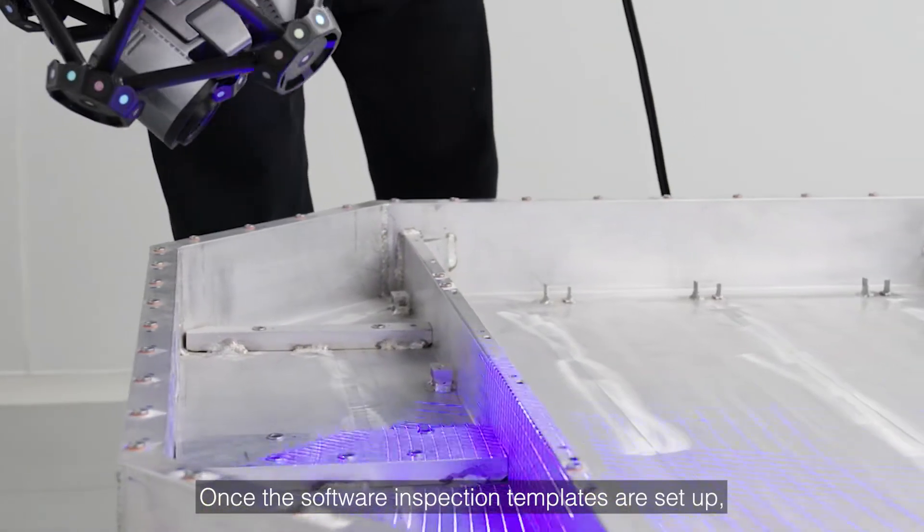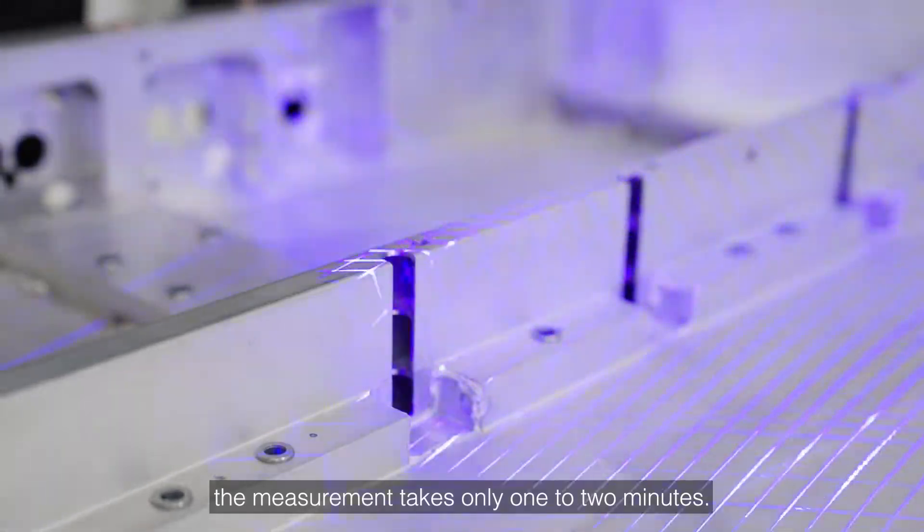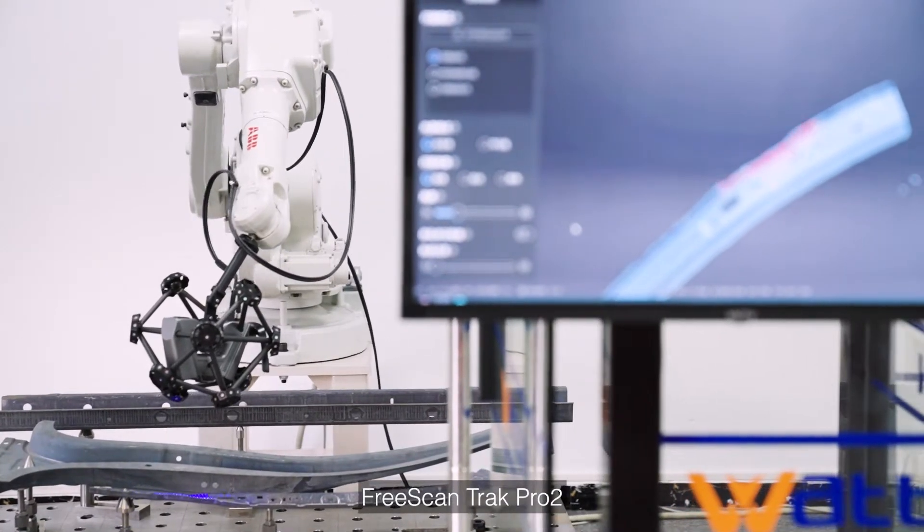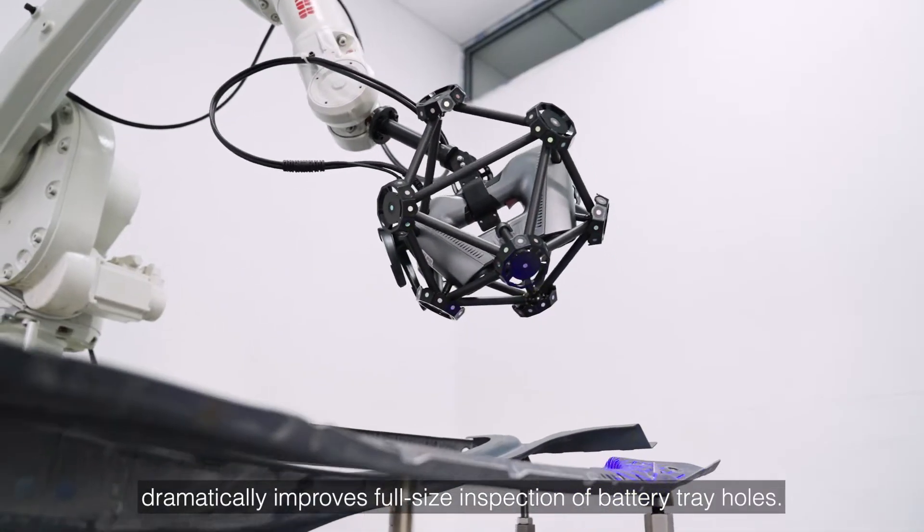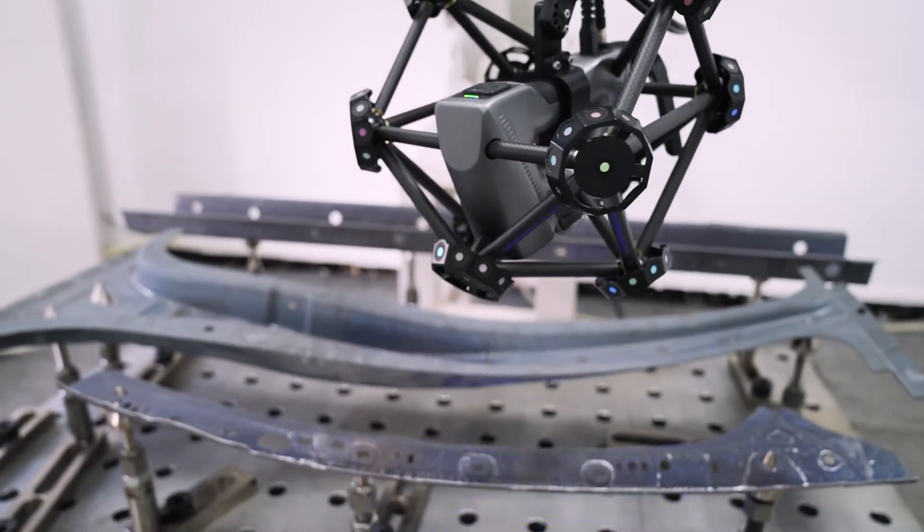Once the software inspection templates are set up, the measurement takes only 1 to 2 minutes. FreeScan Track Pro 2 dramatically improves full-size inspection of battery tray holes.